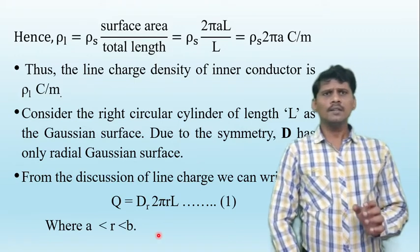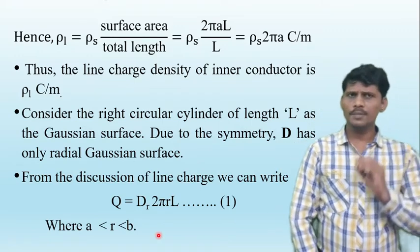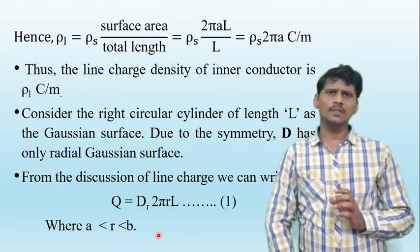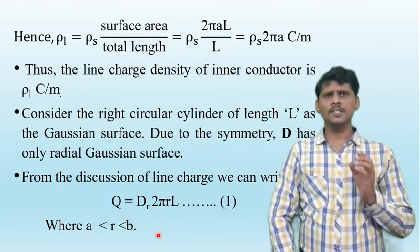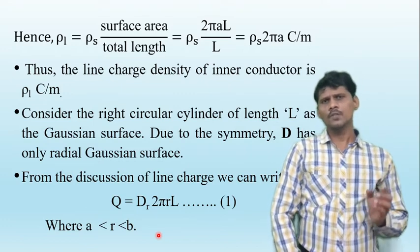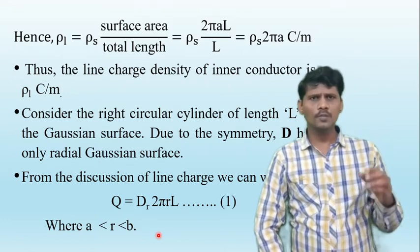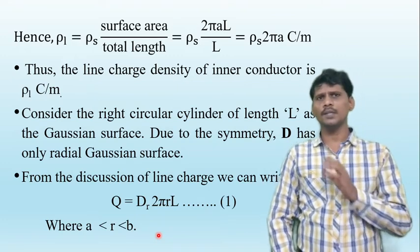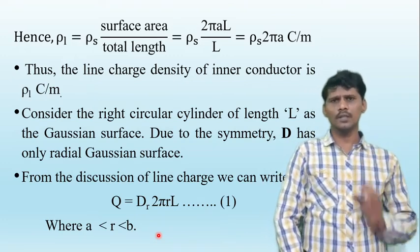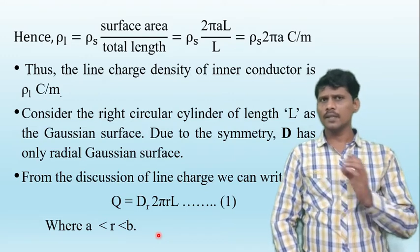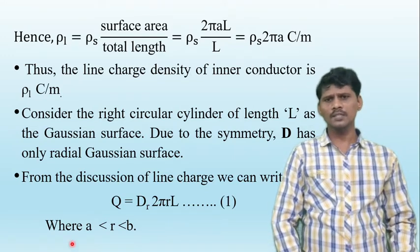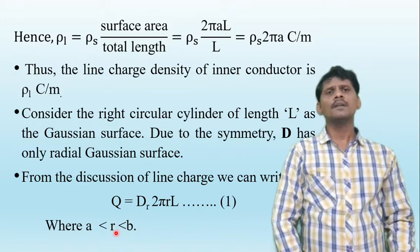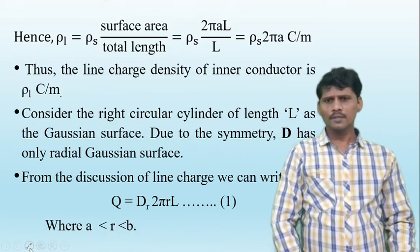'a' is the radius of the inner conductor and 'b' is the radius of the outer conductor. Consider the Gaussian surface as a right circular cylinder positioned between the inner and outer cylinders, where the Gaussian surface radius r satisfies a less than r less than b.